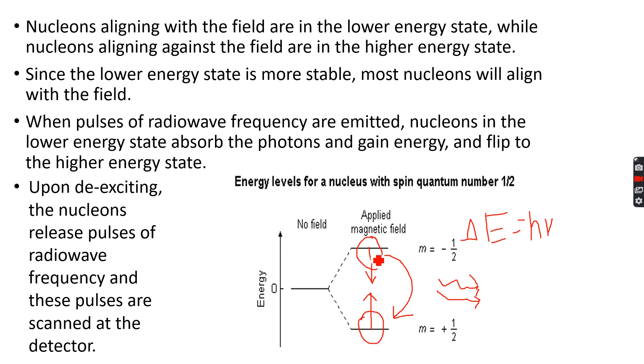The energy released by the nucleon when it flips back from its higher energy state to its lower energy state will be the same. Thus the frequency will be the same, and we will get the frequency that was initially absorbed.